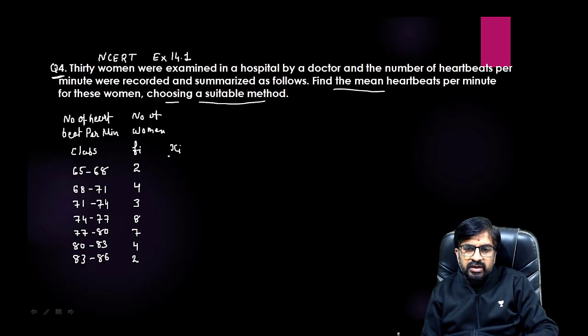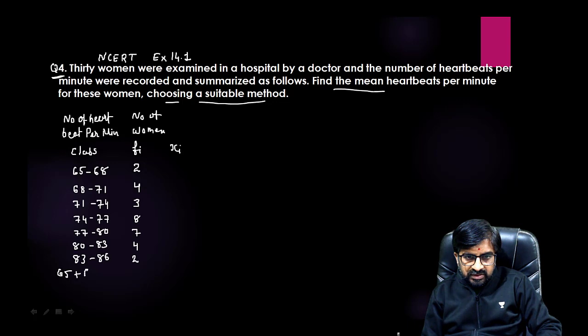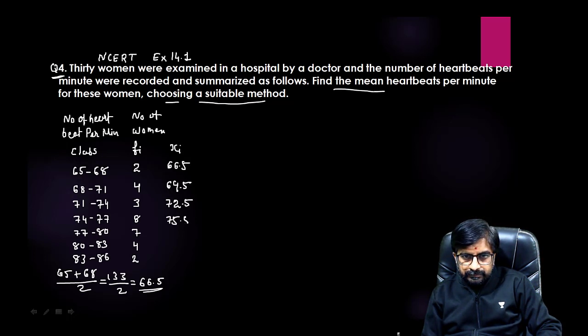Class and frequency is given, so first thing is to find out the class mark. Here if you don't know directly, we cannot find the midpoint, so what we need to do is add them and divide by 2. 65 plus 68 divide by 2, so 133 by 2, you will get 66.5 as your midpoint. Similarly you can see here also, directly I'm going to do. If you don't know, you can use this method, or directly you will get a pattern. You can see I'm doing directly, just add 3 to each: 69.5, 72.5, 75.5, 78.5, 81.5, and 84.5.